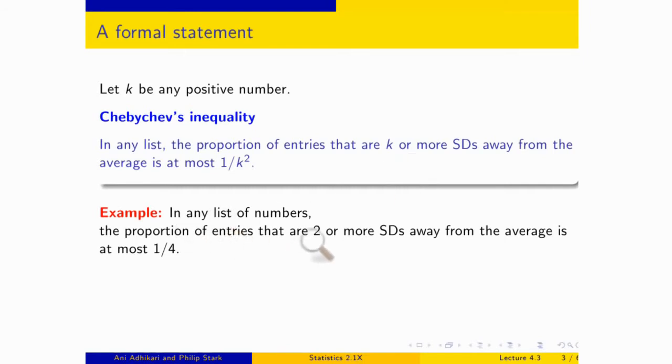If we go two or more SDs away from the average, and how do you do that? Well, you start at the average, and you go two SDs up and two SDs down. And look at the two tails that start at those two points. Those two tails together have a proportion of at most one over two squared. That's one over four. And since one over four is 25%, you can say that at most 25% of the list is outside the range average plus or minus two SDs.